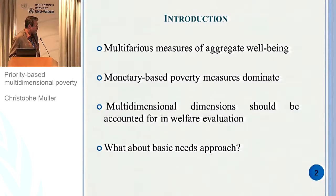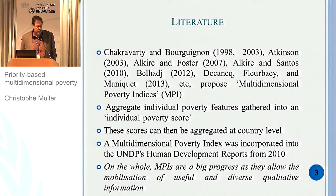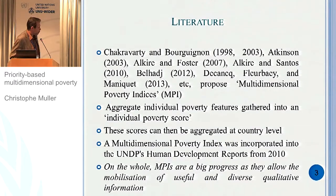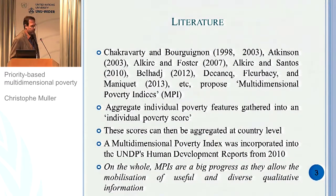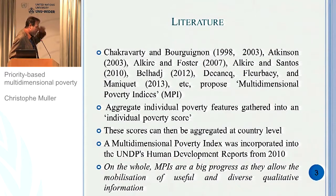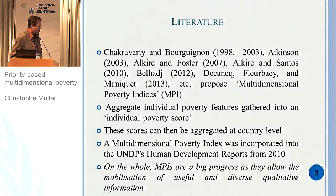What I'm trying to do in this paper is to explore an approach related to basic needs. There is a very large literature — here are a few papers, you can find scores of others on multi-dimensional poverty. Multi-dimensional poverty indices are calculated by aggregating individual deprivation measures into scores, and then aggregating these scores to reach a global poverty index. This is a big progress in poverty analysis, mobilizing information on diverse qualitative deprivations that was previously neglected.